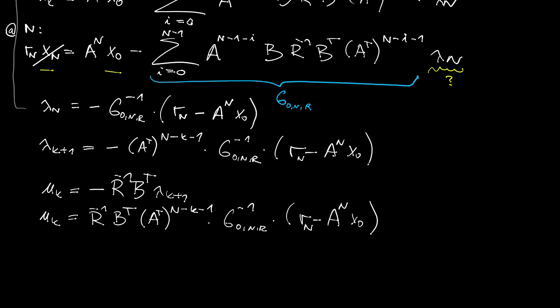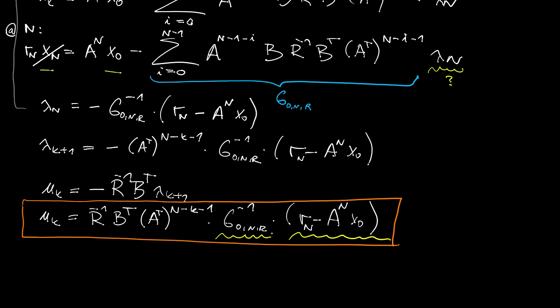But let me now make a few comments. First, have a look at the term in the round brackets. It contains the difference between the desired state and the state which would be reached without control.